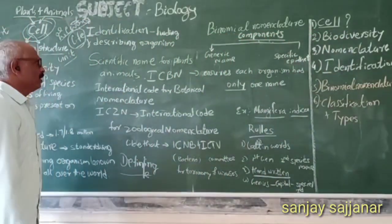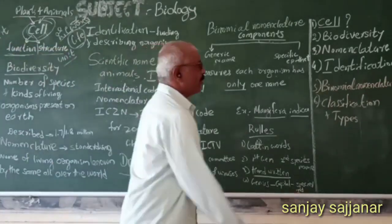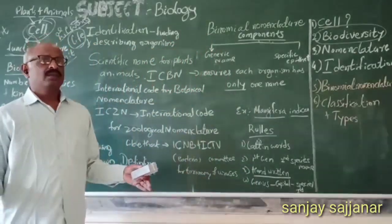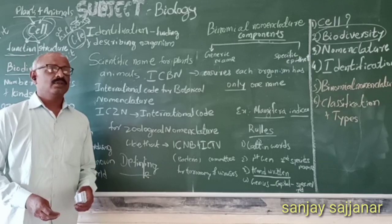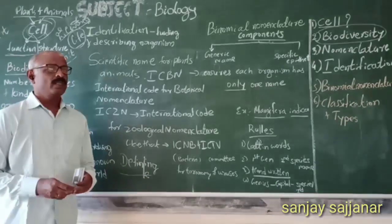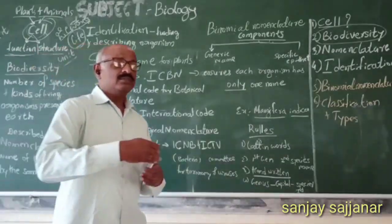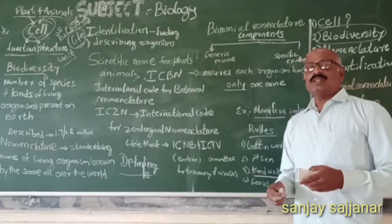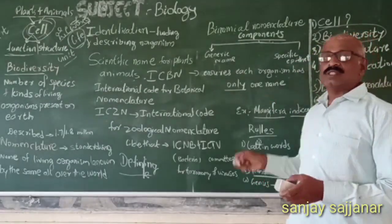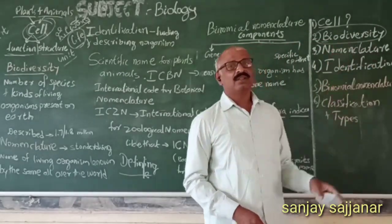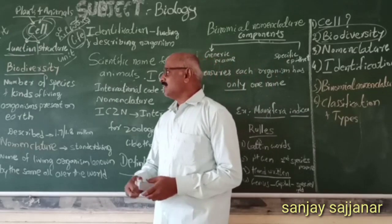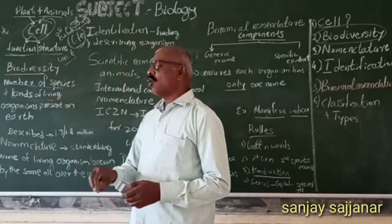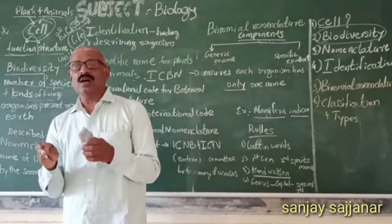Now we move to the second topic, which is biodiversity. 'Bio' refers to living things, and biodiversity refers to the different kinds of organisms that are there. Combined together, that becomes biodiversity. I have written here: biodiversity is the number of species and kinds of living organisms present on the earth.